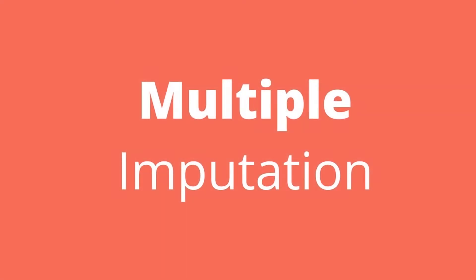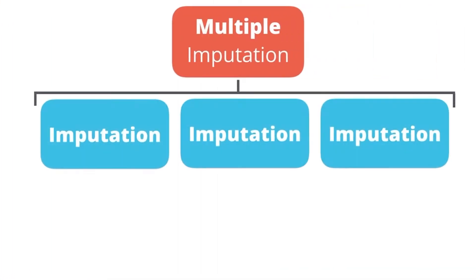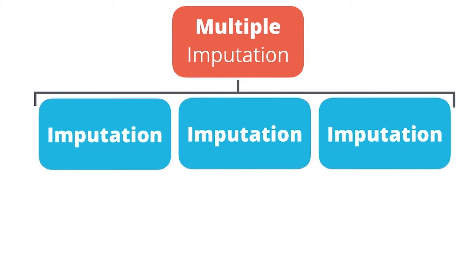The first is called multiple imputation. This is where you do the imputation process multiple times, using a method that will predict the missing values. Typically, by using a regression of other variables and then adding in some random error.